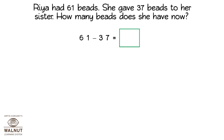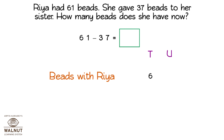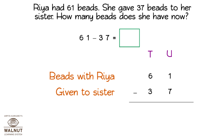So, we write it like this. Then we have to find the answer. How do we do it? First, we write the problem properly in tens and units form. Now, we subtract the numbers in the units place. Can you do it? No. So, we have to borrow.